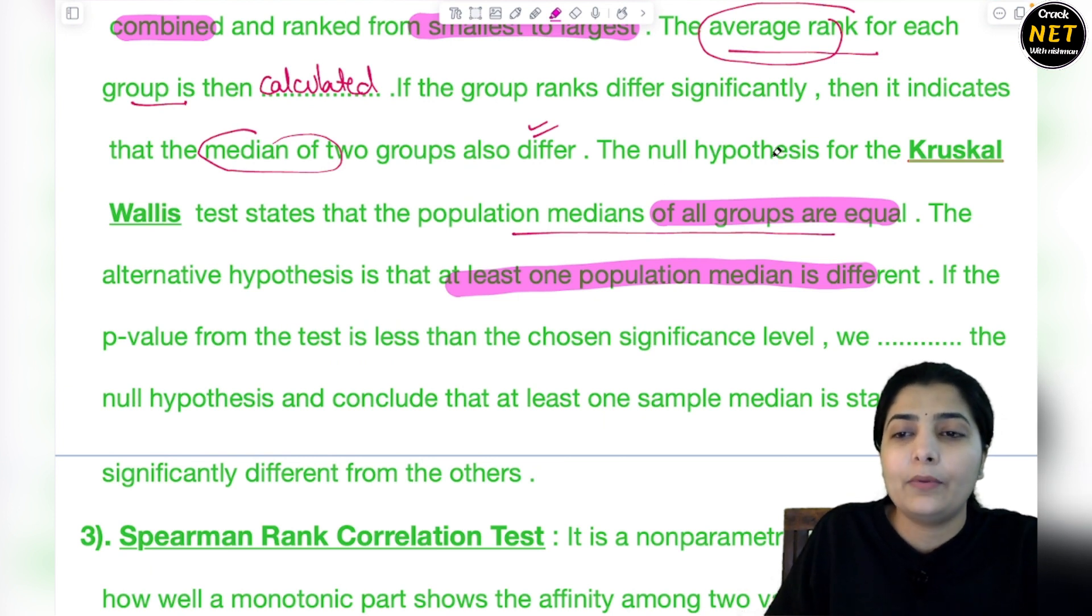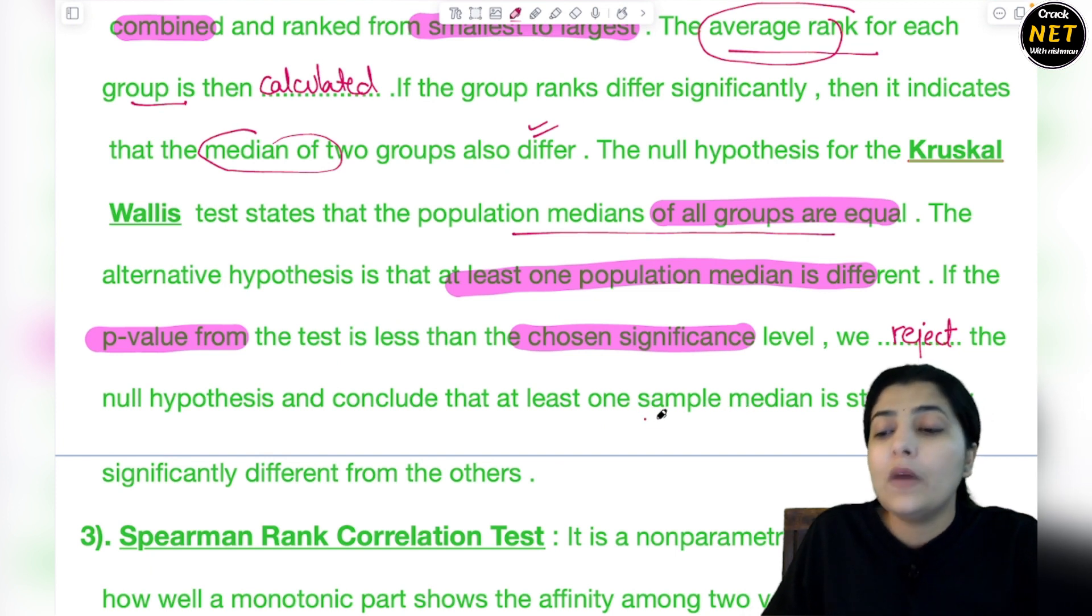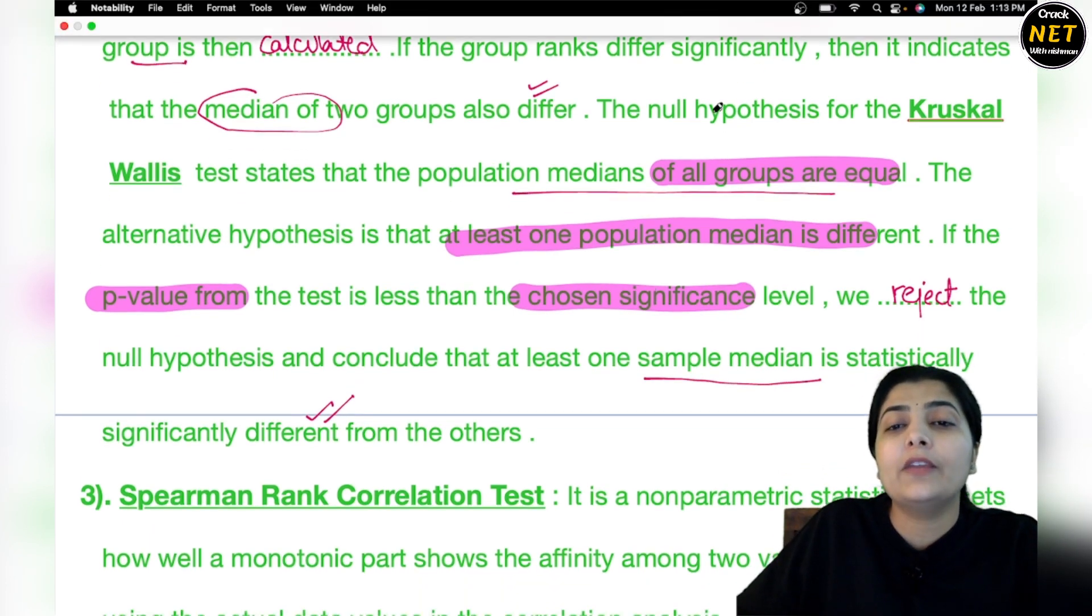If the p-value from the test is less than the chosen significance level, we reject the null hypothesis, as I just told you. We will reject the null hypothesis and conclude that at least one sample median is statistically significantly different from the others. One median differs from the other.